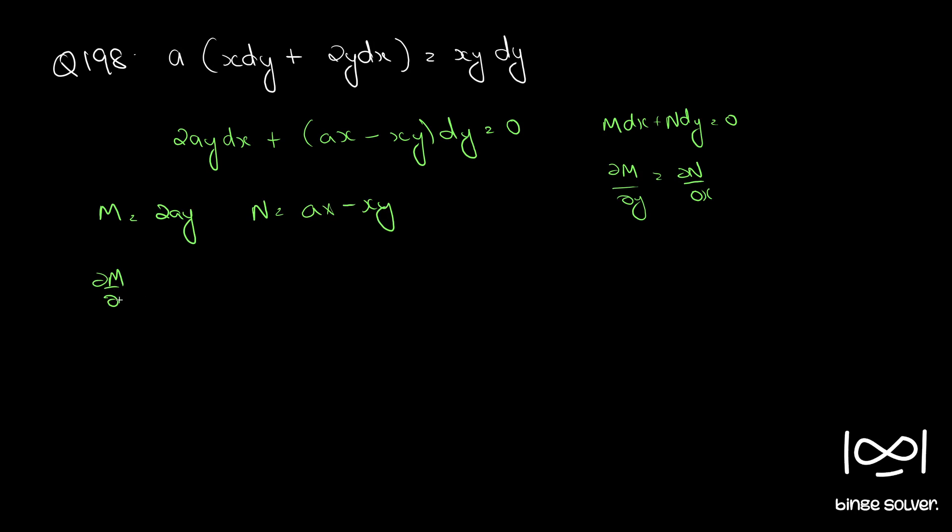So ∂M/∂y gives 2a and ∂N/∂x is a minus y. So it is not equal to ∂N/∂x and it implies the differential equation is not exact.